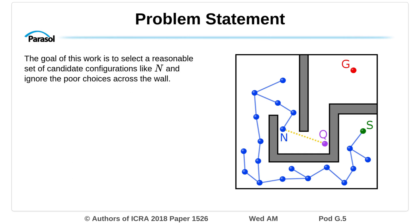The goal of this work is to select a reasonable set of candidate configurations like N and ignore the poor choices across the wall.